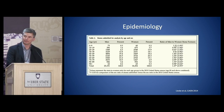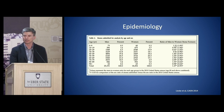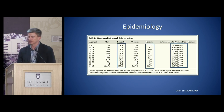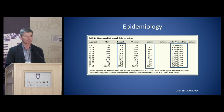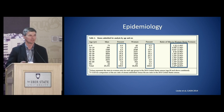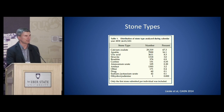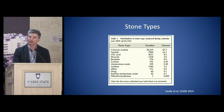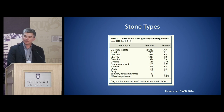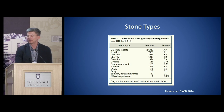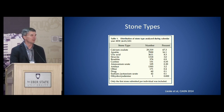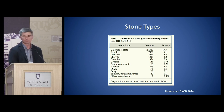Here is some basic data about age and sex in terms of stone presentation. Both men and women are represented, and it tends to be an illness that occurs in middle age — around 40 to 60 years old — and is predominantly male. Looking at stone types, the most common is calcium oxalate, occurring about 67% of the time. Apatite and brushite are both calcium phosphate types and are the next most common if grouped together. Uric acid is the third most common, so we'll focus on those three.